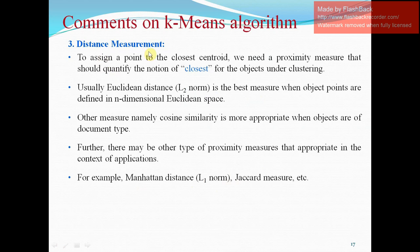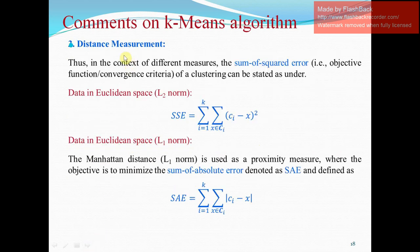Distance measurement is usually denoted by either Euclidean distance. L2 norm is the best measure when objects are defined in N dimensional Euclidean space. Other measures, namely cosine similarity is more appropriate when objects are documented. Further, there may be other type of proximity measures that are appropriate in the context of application. For example, Manhattan distance that is L1 norm, etc. The distance measurement formulas have been given.